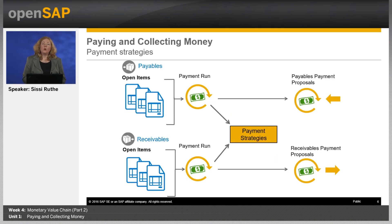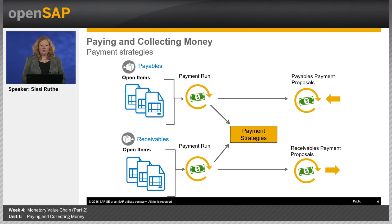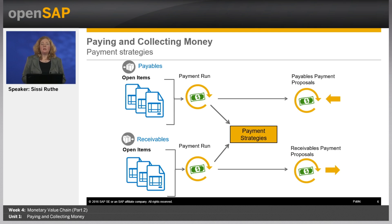To reduce the workload of users, automatic processes are necessary whenever possible. The system supports this by automatic payments. When creating automatic payments by a payment run, the system automatically selects open payables and receivables and creates payment proposals based on them. For open payables, it does not matter if the source document is an invoice, a tax liability, or a travel and expense report. The automatic selection of open items is done based on payment terms, the next payment run date, and the payment strategy assigned to the customer or supplier.